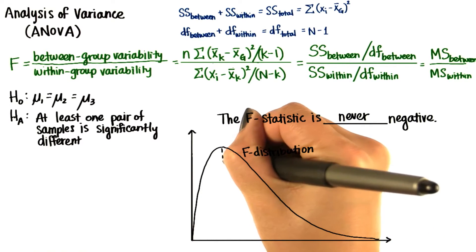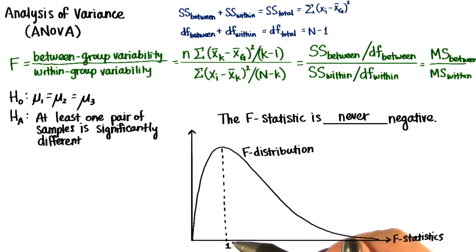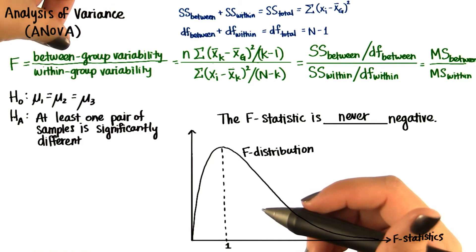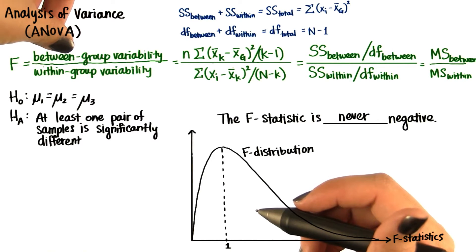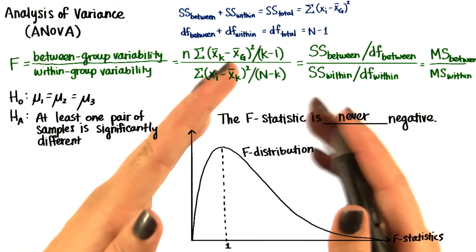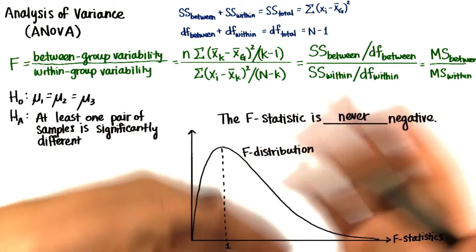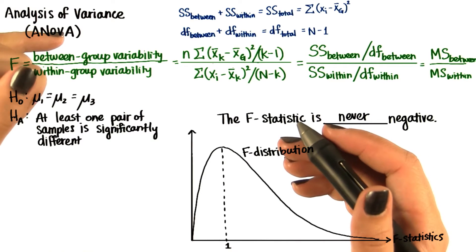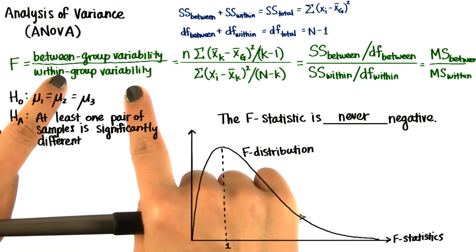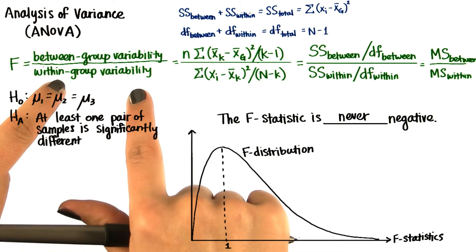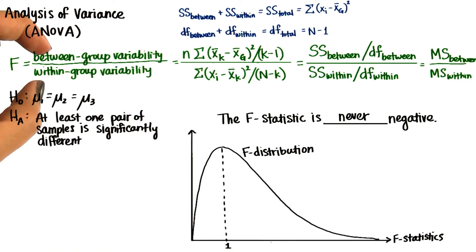This distribution peaks at 1. This is because if there are no differences in the population means, in other words, the between group variability is expected to be 0, then the mean of each sample will still likely differ by chance. Since the difference then is due to chance, the same way that each subject in each sample differs by chance, as measured by the within group variability, then the between group variability and within group variability will be the same.